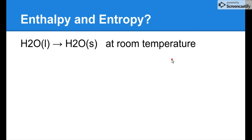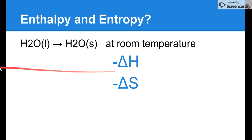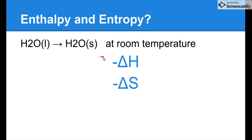Enthalpy and entropy for water going from liquid to solid: negative delta H and negative delta S. We're losing energy because liquid particles have a lot of energy and solid particles have much less. For delta S, we're going less disordered — liquid particles are more disordered, solid particles are less disordered.